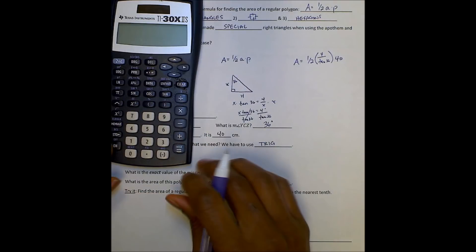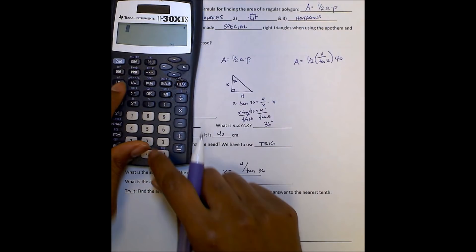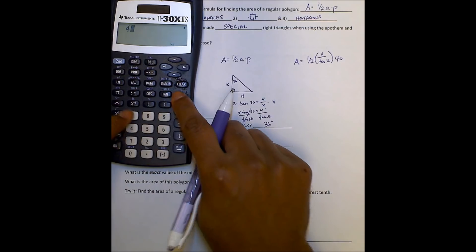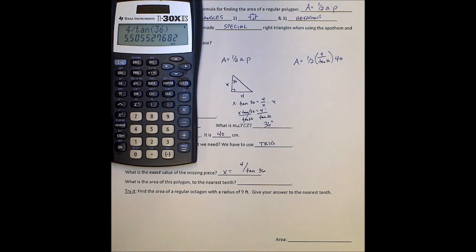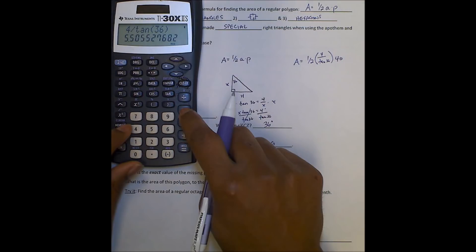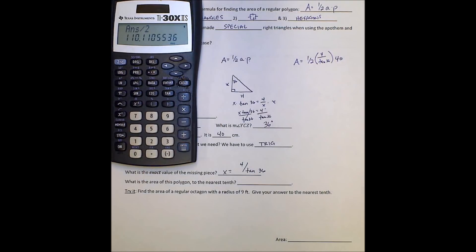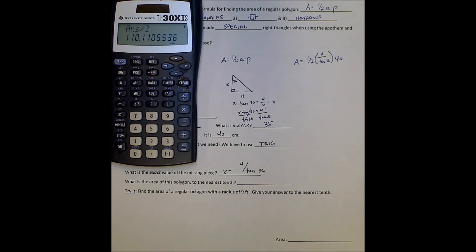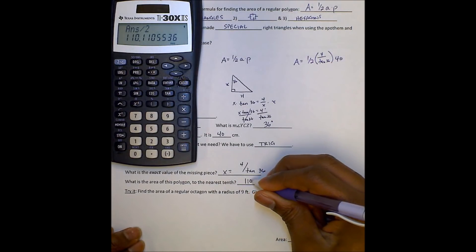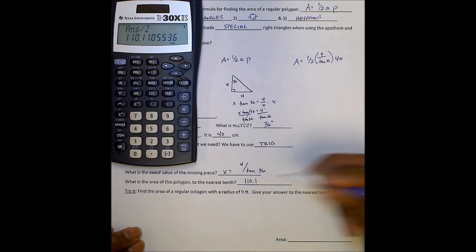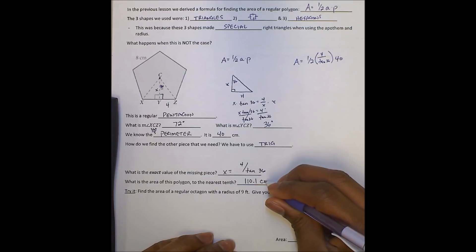So now I'm going to go into my calculator. I'm going to do 4 over tangent 36. That gives me a big, long number. I'm going to multiply that by 40. And then I'm going to divide that by 2. You see, I did not have to round anything. And so then my final answer is 110.1, what was that figure? Centimeter squared.